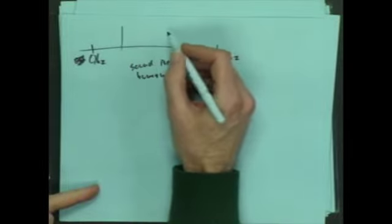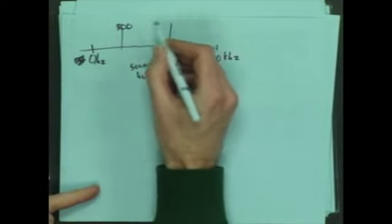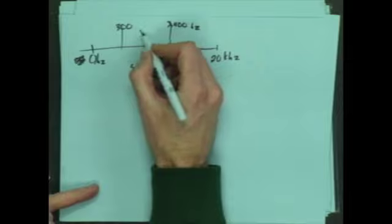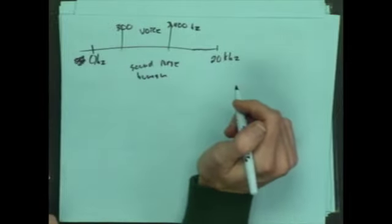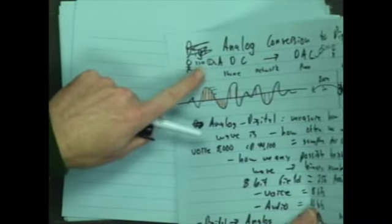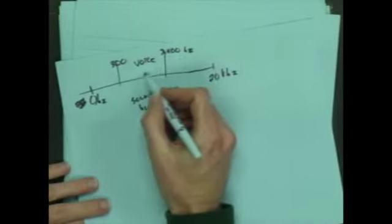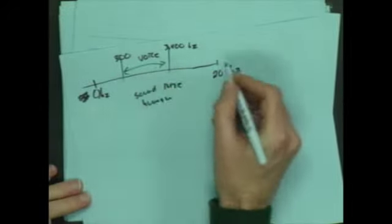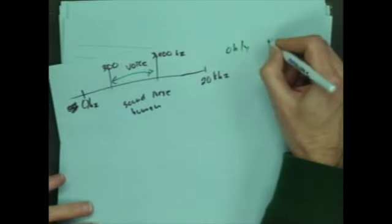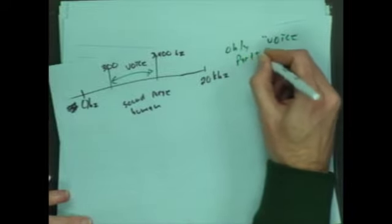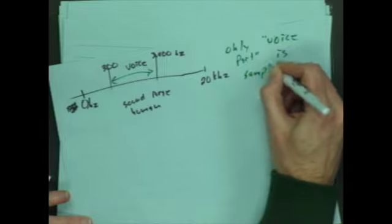Normally your voice is actually between 300 and about 3,400 hertz. This is voice. And so what we normally do, we think about the microphone. There's the microphone right here. We actually only take this part of the signal. Only the voice part is sampled.